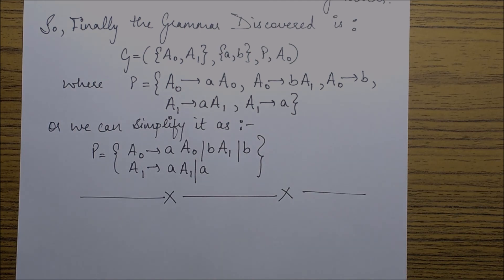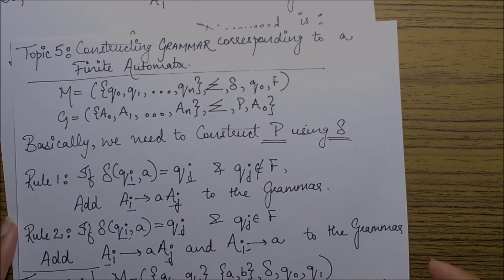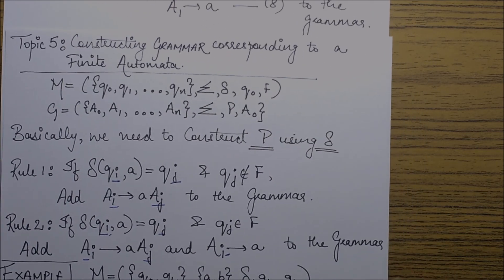So this was all about constructing a grammar corresponding to a finite automata. In my next session I'll be explaining the reverse procedure, that is how do we obtain a finite automata from a given regular grammar, so do visit it.